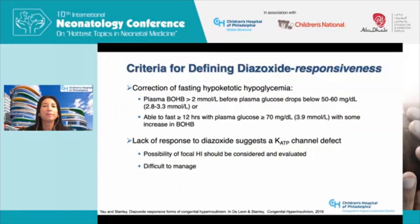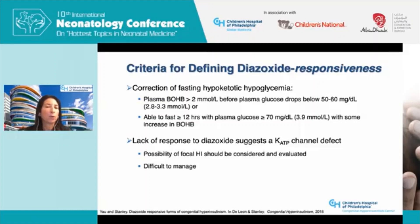Diazoxide responsiveness is defined by biochemical markers showing reversal of the cardinal hallmark of hyperinsulinism — fasting hypoketotic hypoglycemia. Lack of response to diazoxide suggests hyperinsulinism due to a KATP channel defect. In this group, one must consider the possibility of focal hyperinsulinism, since these babies can be cured by surgery — accounting for about 50% of cases.